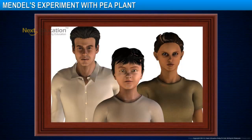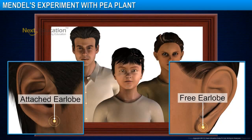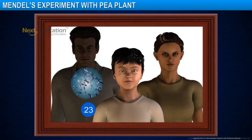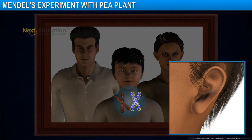The human population has two variants of earlobes. Some have free earlobes while others have attached earlobes. A particular mechanism is responsible for such variations. The inheritance of traits is related to the fact that both the father and mother contribute equal amounts of genetic material to the child. If we try to correlate the earlobe of a child with that of the parents, we understand that the father's gene for earlobe is dominant, because of which the child developed an attached earlobe.